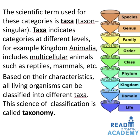Taxa indicate categories at different levels. For example, kingdom Animalia includes multicellular organisms such as reptiles, mammals, etc. Based on their characteristics, all living organisms can be classified into different taxa. This science of classification is called taxonomy. The different taxa classify life into domains, then kingdoms, phyla, classes, orders, families, genera, and finally species.